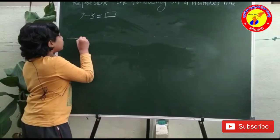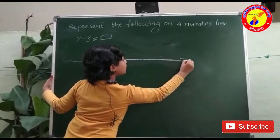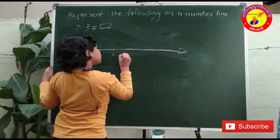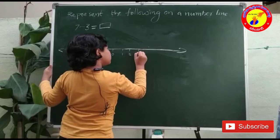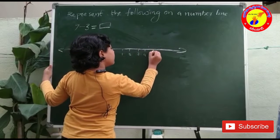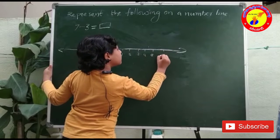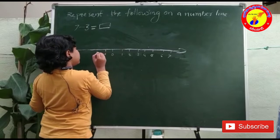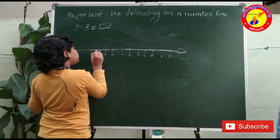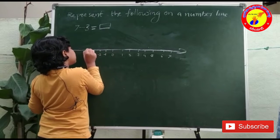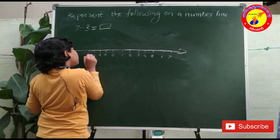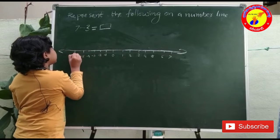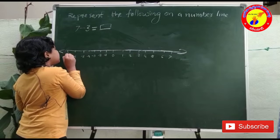First of all, we draw a number line. On the positive side: 1, 2, 3, 4, 5, 6, 7. On the negative side: minus 1, minus 2, minus 3, minus 4, minus 5, minus 6, minus 7.